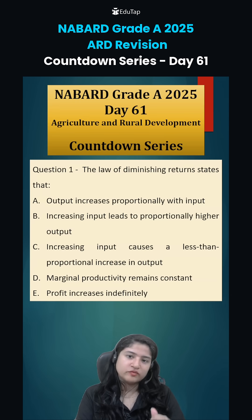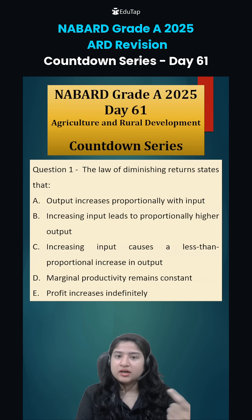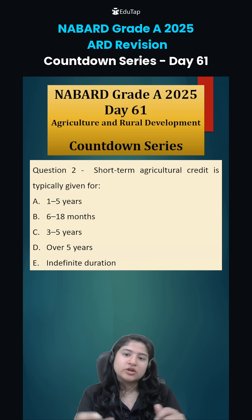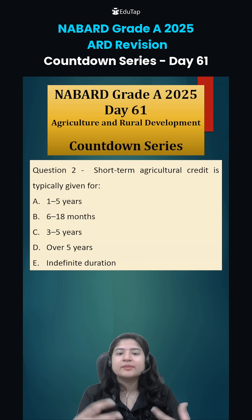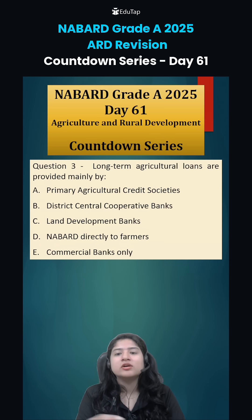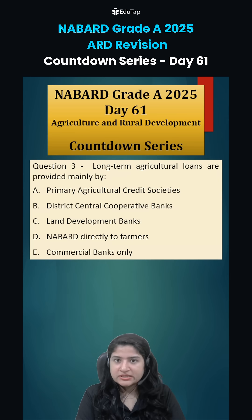Coming to today's homework questions: question number 1 is — the law of diminishing returns states that, so what does it state? You have to tell. Question number 2 — short term agriculture credit is typically given for how many months? And question number 3 — long term agriculture loan, if any farmer has to take it, is mainly provided by which of the following options?